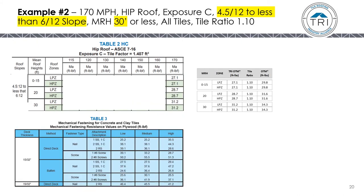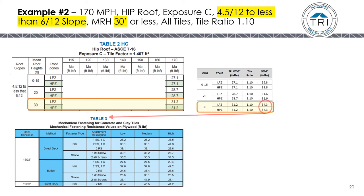Example two: we change the roof slope to 4.5:12 to less than 6:12. We go to Table 2HC, get the required aerodynamic uplift moment, factor in the tile ratio, then go to Table 3 and find the fastening methods that can be used on a hip roof at 170 mph, Exposure C, 4.5:12 to less than 6:12 slope, 30-foot mean roof height.